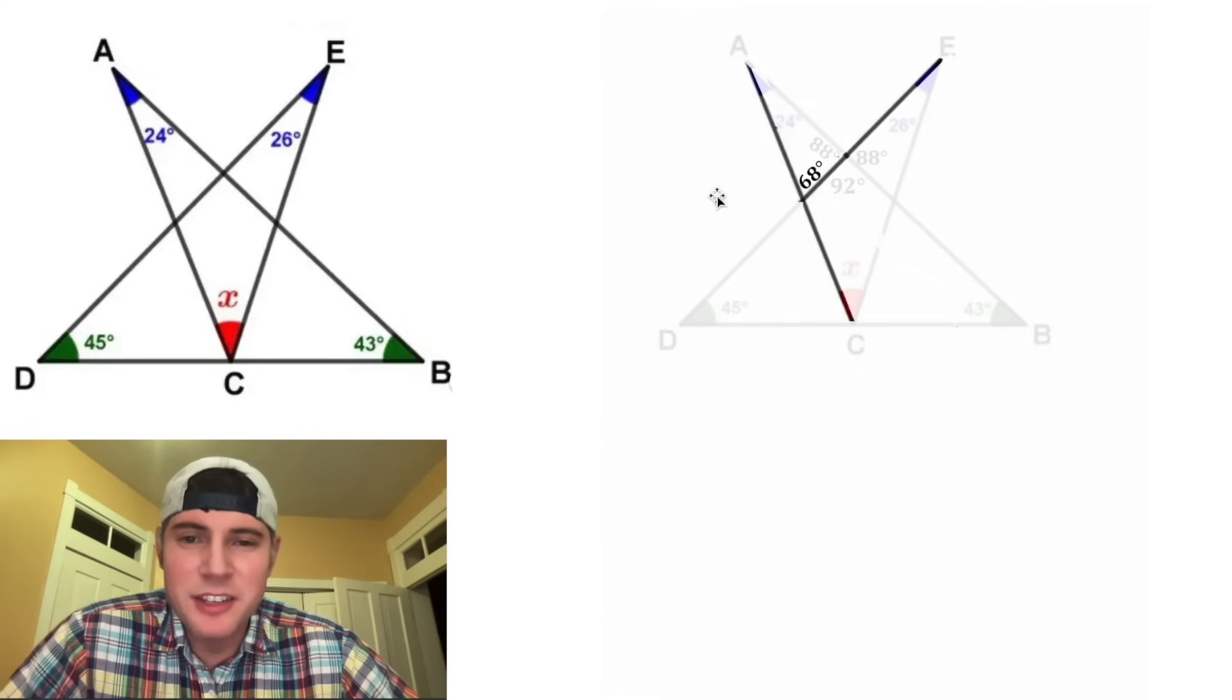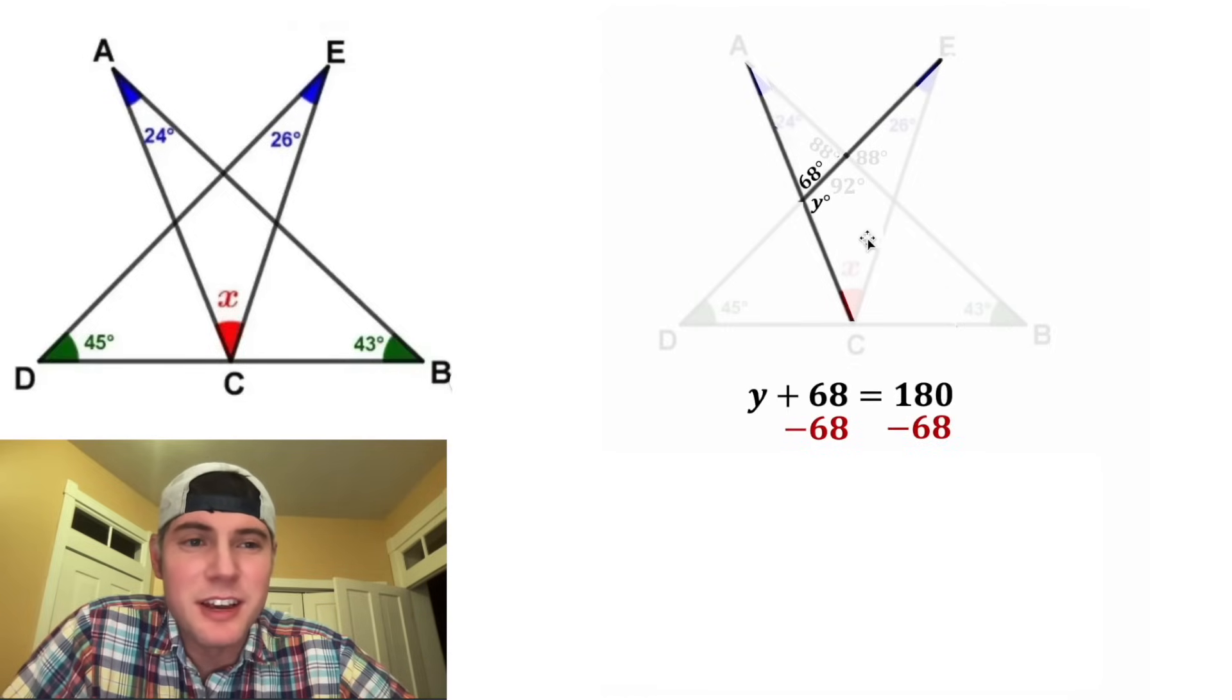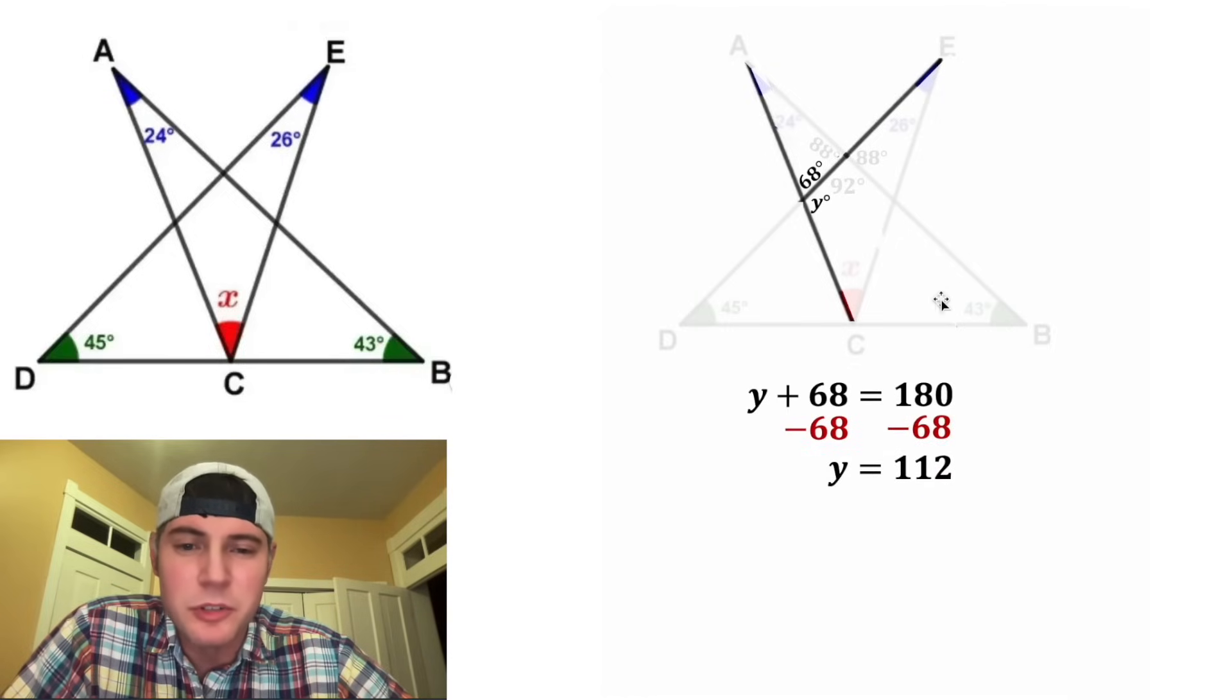And then if we extend this here, we have another linear pair. And if we make this Y degrees, then the Y plus 68 needs to equal 180. And then we can subtract 68 from both sides, and we get Y is equal to 112.